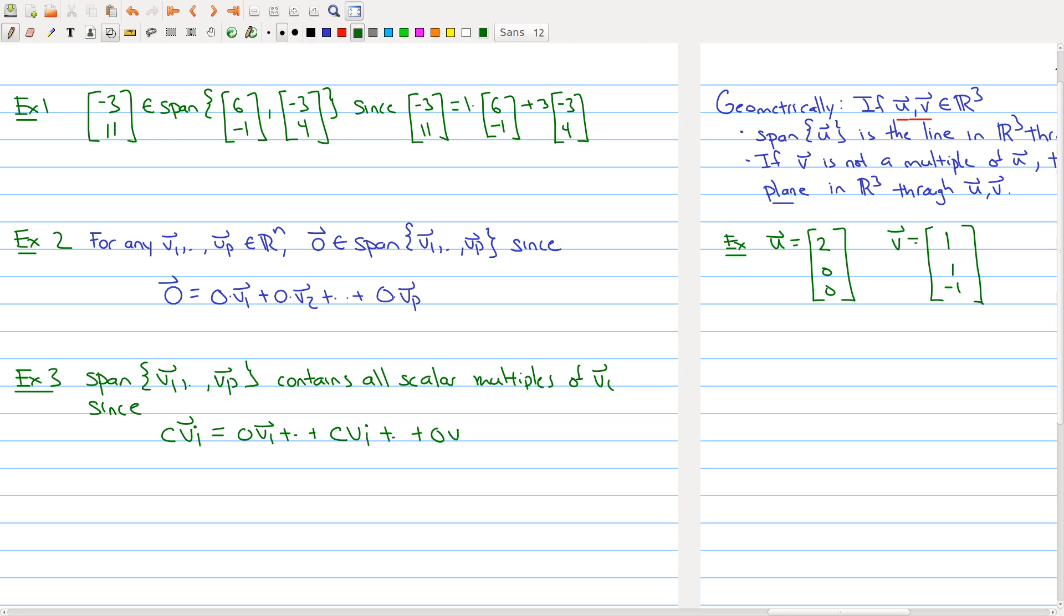In other words, you put all the weights to zero except for the weight in front of vi. So the span of any collection of vectors contains all scalar multiples of each of the vi's, but it also contains more—all the possible sums of all those vectors.